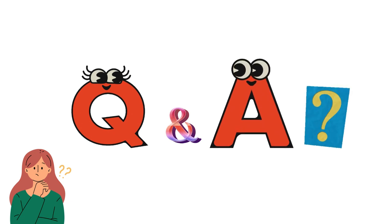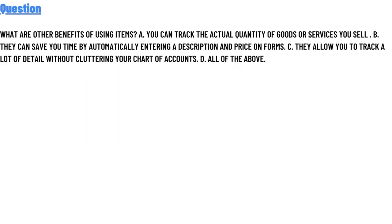Today's question is: what are the other benefits of using items? Option A: you can track the actual quantity of goods or services you sell. Option B: they can save you time by automatically entering descriptions and prices on forms. Option C: they allow you to track a lot of details without cluttering your chart of accounts.